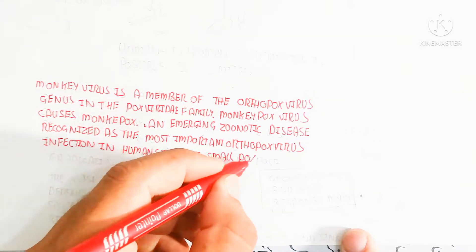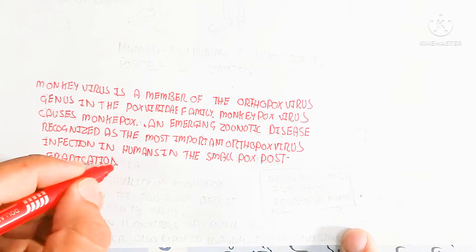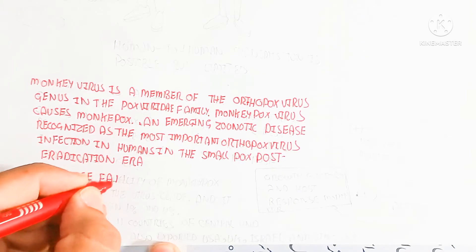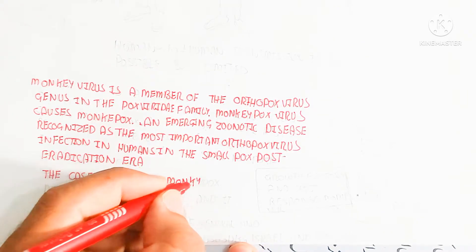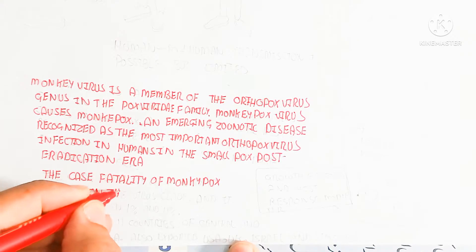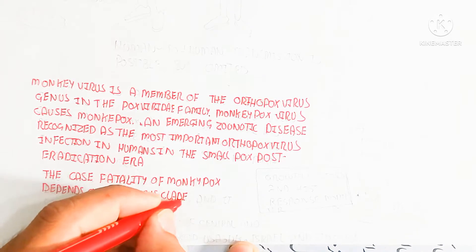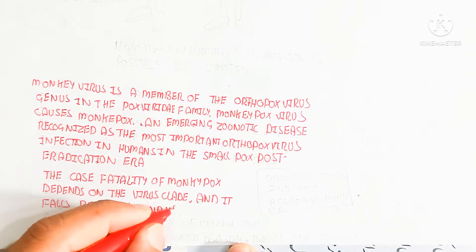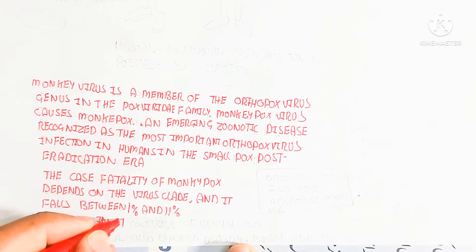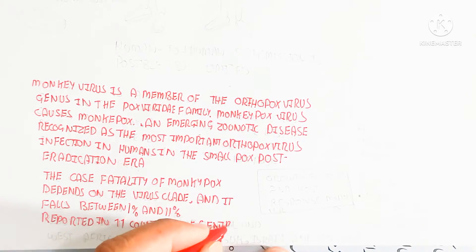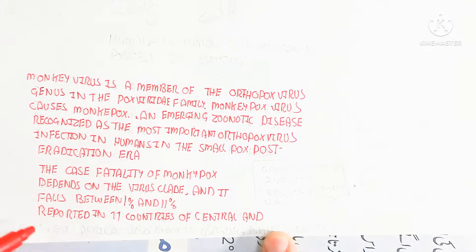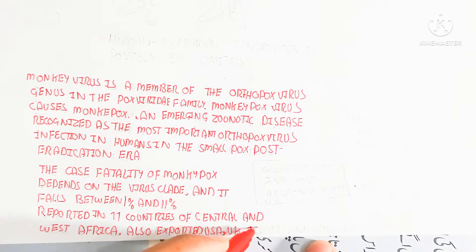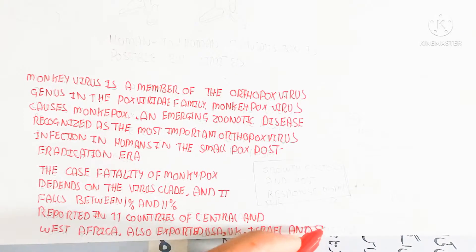The case fatality of monkeypox depends on the virus clade and falls between one percent and eleven percent. Cases have been reported in eleven countries of Central and West Africa, and also exported to the USA, UK, Israel, and Singapore. These are all the countries where cases of the monkeypox virus have been recognized.